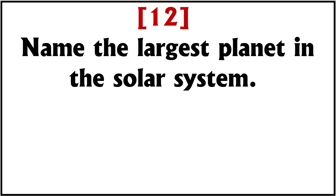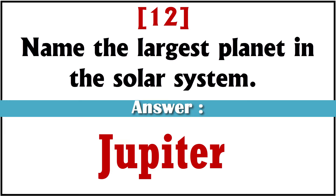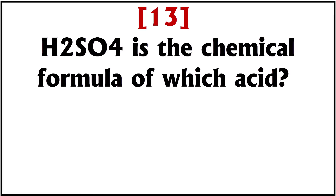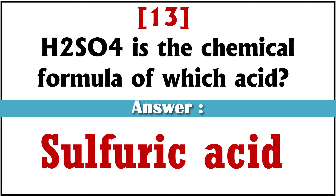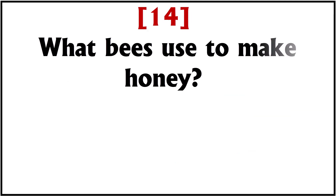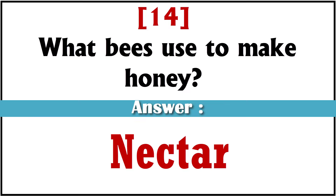Name the largest planet in our solar system. Answer: Jupiter. H2SO4 is the chemical formula of which acid? Answer: Sulfuric acid. What do bees use to make honey? Answer: Nectar.